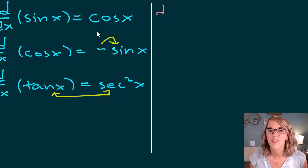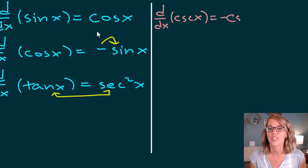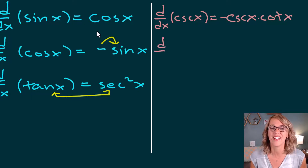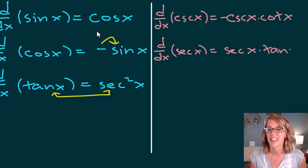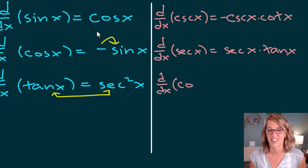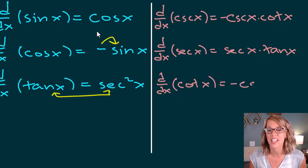Moving on to the other three: the derivative of cosecant x is equal to negative cosecant x times cotangent x. The derivative of secant x is equal to secant x times tangent x. And finally, the derivative of cotangent x is equal to negative cosecant squared.